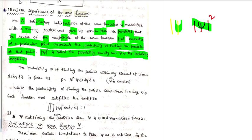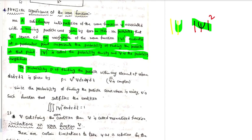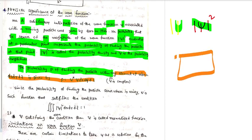The probability P of finding the particle within any volume element dx dy dz is given by P equals the probability density times dx dy dz. The volume element is called dx dy dz.